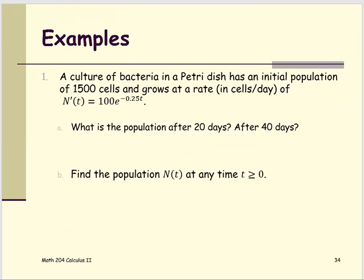For this example about biology: a culture of bacteria in a petri dish has an initial population of 1500 cells and grows at a rate of N prime of T equals 100e to the negative 0.25T. The initial means N at zero, and N at zero is provided to be 1500.